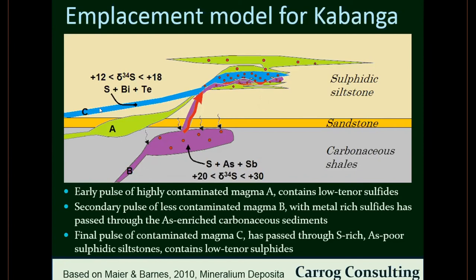The later C magma, which appears to have come in over the top, has very low tenor sulfides largely deriving from the sulfidic siltstone — its intrusion pathway largely passed through siltstones. The B magma's intrusion pathway largely assimilated material from the carbonaceous shales. Wolfmeyer and co-workers have measured Delta-34S and found subtle differences in the Delta-34S signature for the A, B, and C magmas. I'm proposing this reflects assimilation of sulfur from different sedimentary reservoirs.